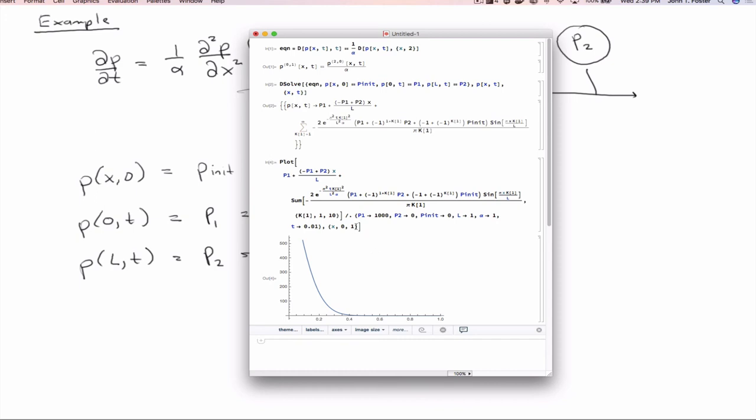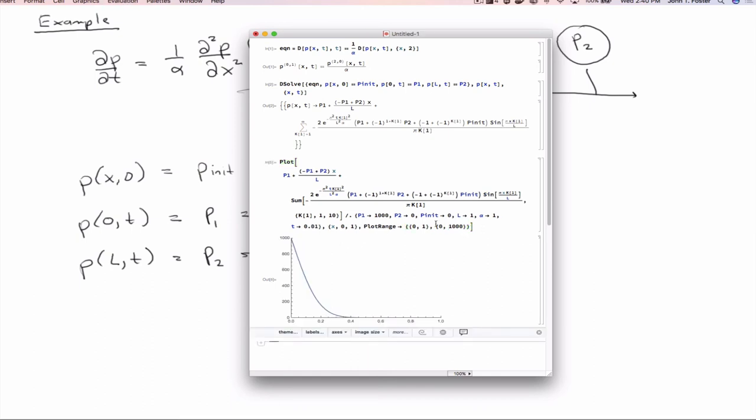And so there we have it. We should probably fix the plot range to be, let's see, from in the x direction we want to go from 0 to 1, and in the y direction we need to go from 0 to 1000. Okay, so that's at one time.